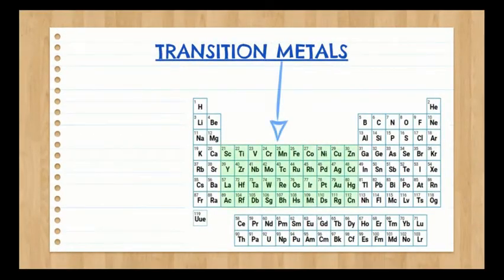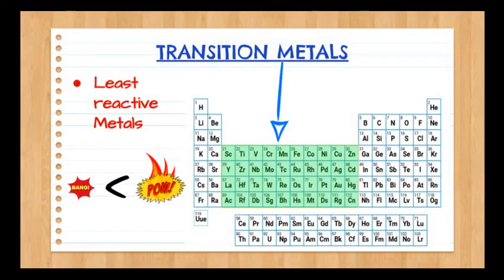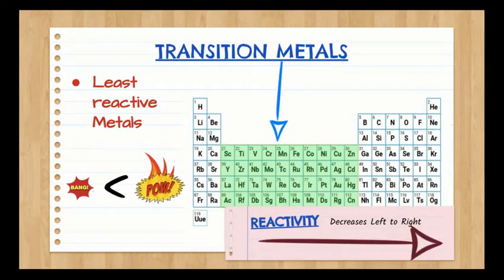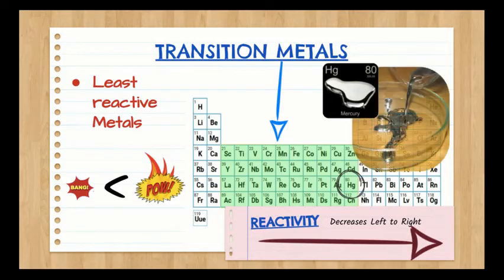The transition metals are generally less reactive than alkaline earth metals and alkali metals. This is because reactivity of metals decrease as you move from the left to the right on the periodic table. All metals are solids except for the transition metal mercury, which is a liquid at room temperature.